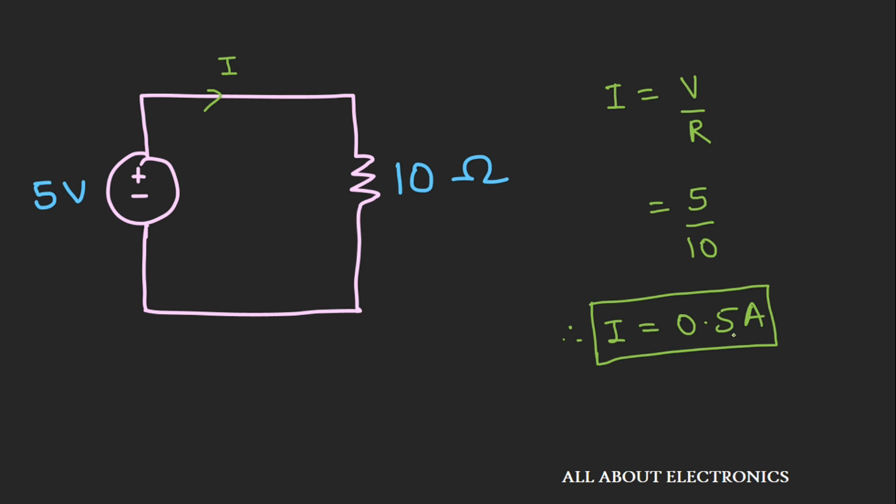I hope you understood how to find an equivalent resistance when a bunch of resistors are connected either in series or in parallel combination. We will see more such examples based on series and parallel combination in the upcoming videos. If you liked this video, hit the like button and subscribe to the channel for more such videos.